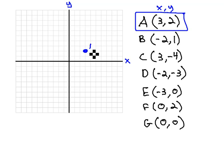Right 3 up 2, point A. Point B starts with negative 2, meaning we move negative 2 to the right, which would be backwards, left 2, and 1 up, point B.